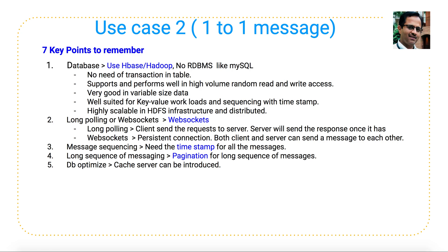The fifth key point is database optimization. In WhatsApp or Facebook Messenger, billions of messages are transferred between users. To make sure the database performs well, you can introduce a cache server in front of the database so that performance is improved and optimized.